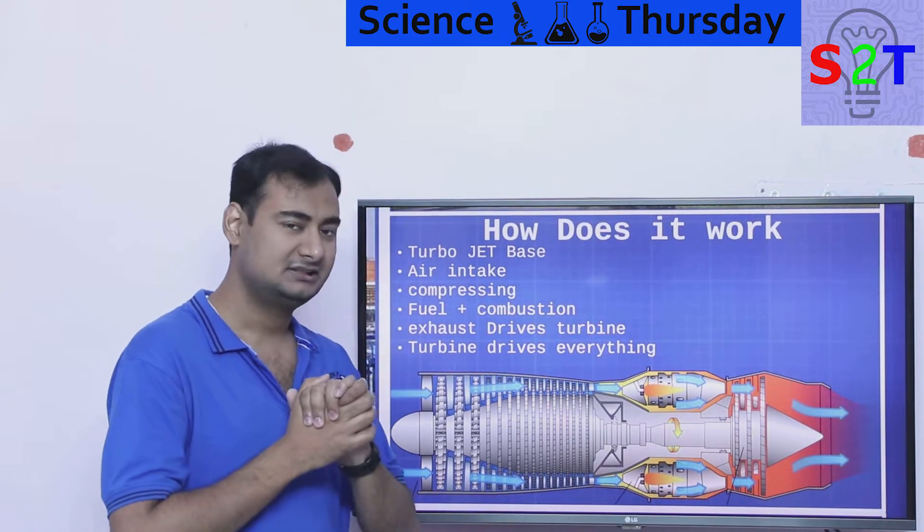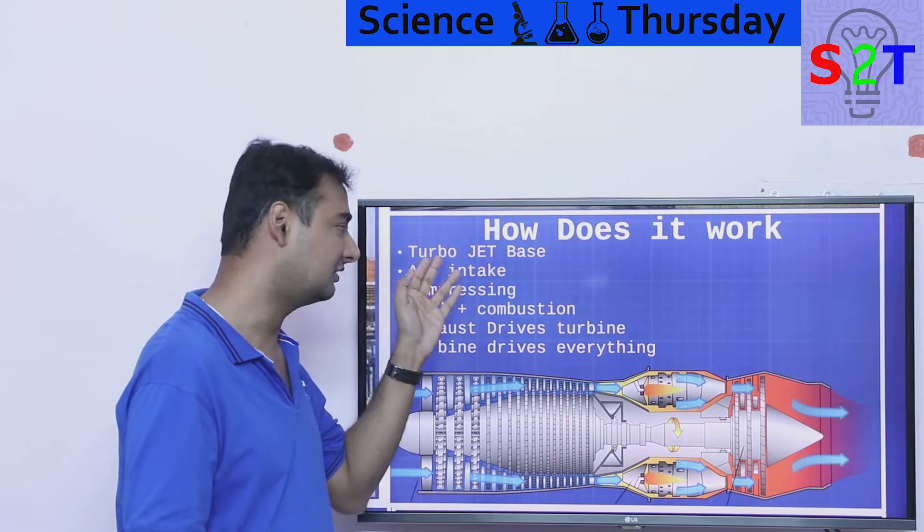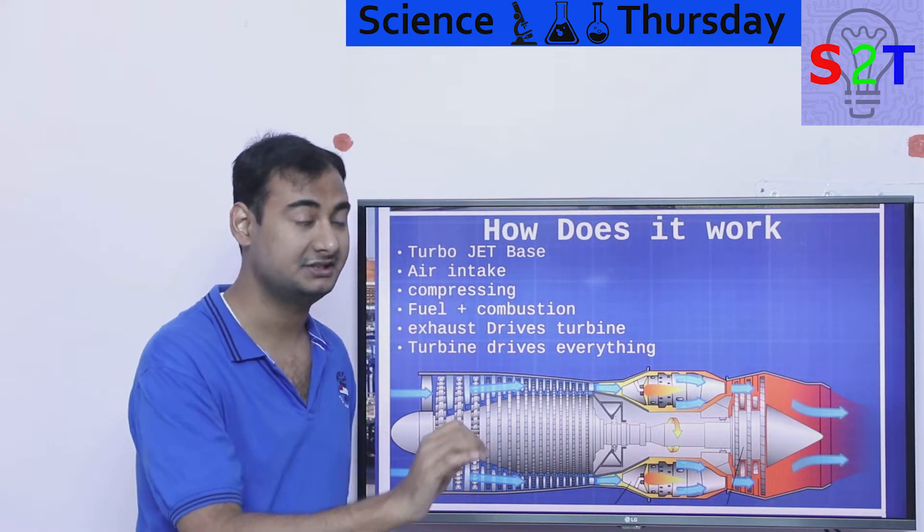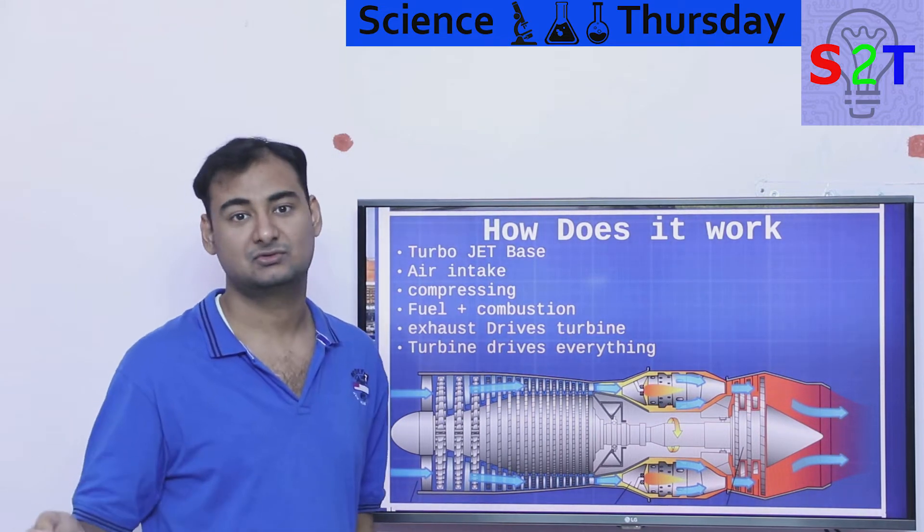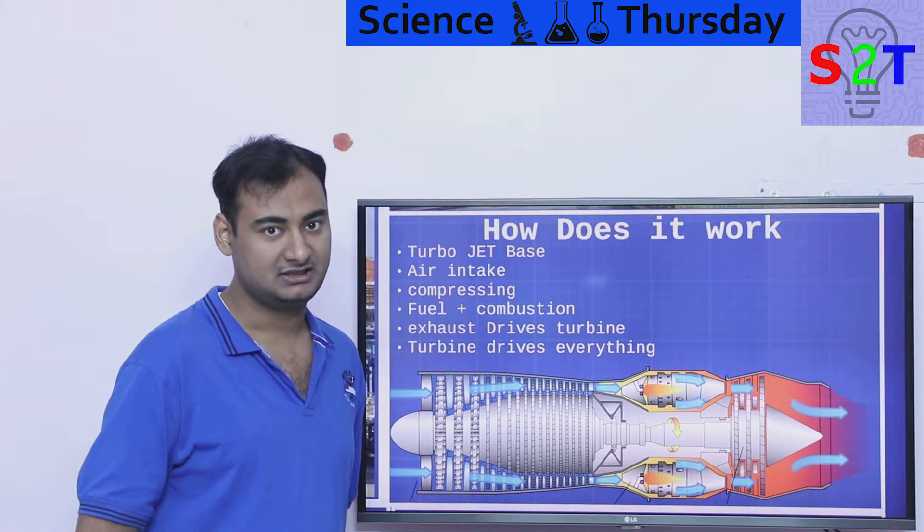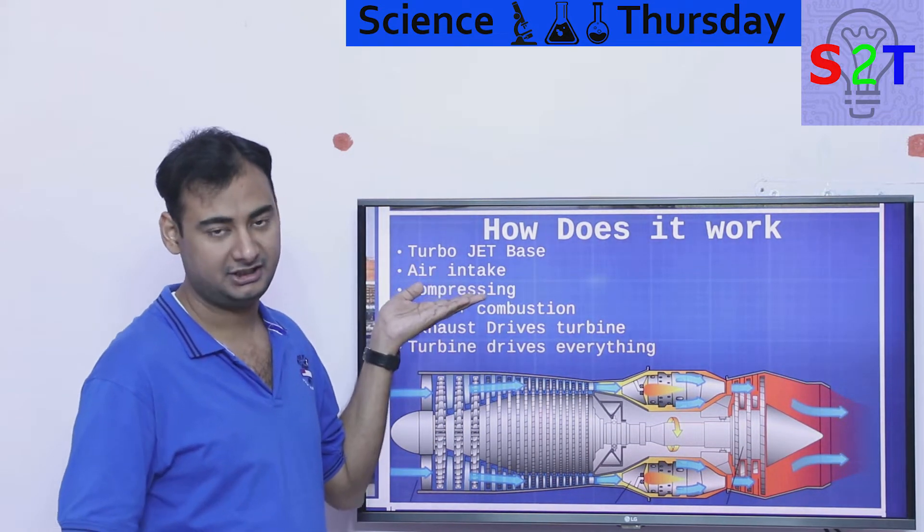Let's understand how the heck it works. It's surprisingly simple. The core design is turbojet, not turbofan based. Turbofans are used for passenger jets and turbojet is generally used for fighter jets. Turbojets are a bit more powerful but less efficient. First thing you do you have an air intake manifold.